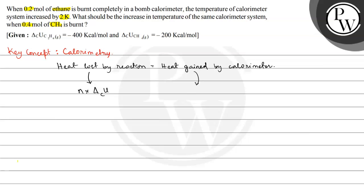And heat gained by calorimeter will be heat capacity, let us say this is C. C be the heat capacity of calorimeter multiplied by delta T, where C is heat capacity of calorimeter.